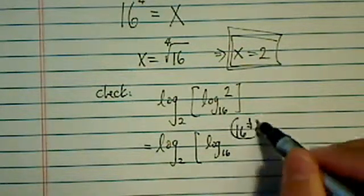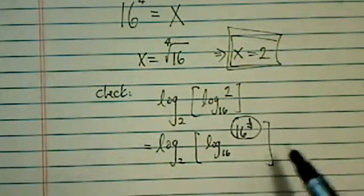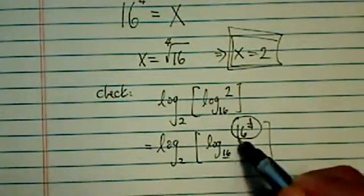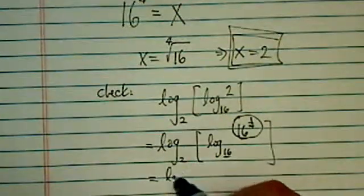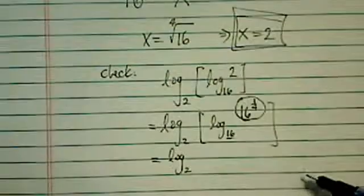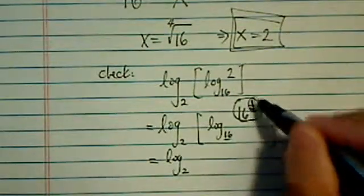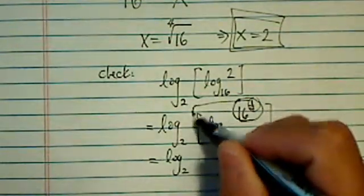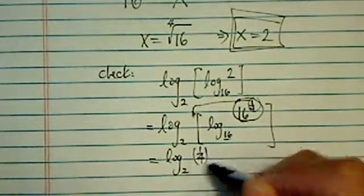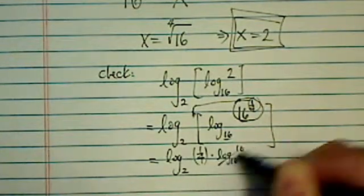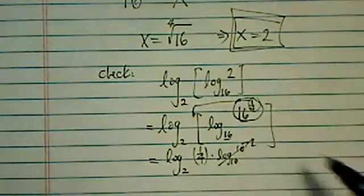So basically I rewrote the 2 here. The reason I want to rewrite that is I want to try to match the base. And then this becomes log base 2. This quarter comes in the front, so it becomes a quarter times log base 16 of 16, which conveniently becomes 1.